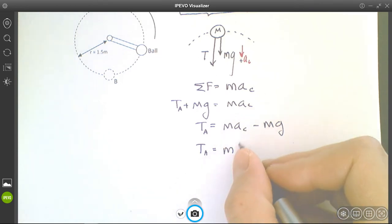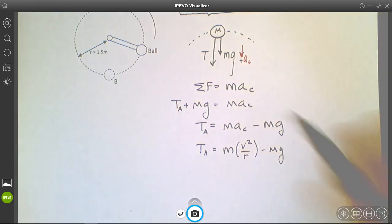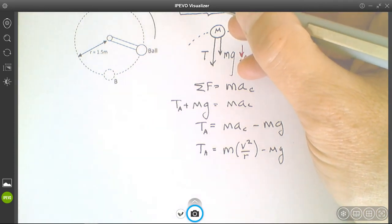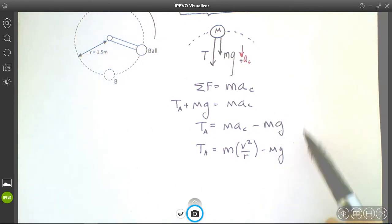I could write this as v squared over r, but the problem is we don't have the speed. You could find the speed by 2πr over T, because we know that it's rotating at one cycle per second (one hertz), then it takes one second to make a complete circle.